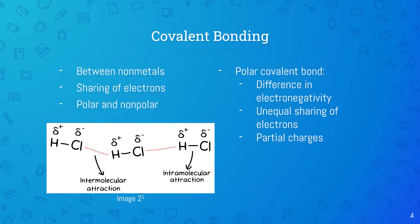Covalent bonds occur between two nonmetals. In this type of bond, the atoms share electrons. There are two types of covalent bonds: polar and nonpolar. Polar covalent bonds are between two atoms that have a difference in electronegativity. This difference causes unequal sharing of electrons, resulting in the more electronegative atom having a partial negative charge and the other atom having a partial positive charge. In this image, the intramolecular attraction is a polar bond.